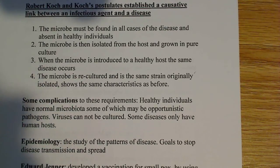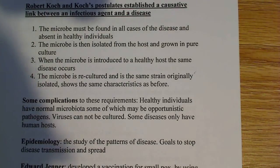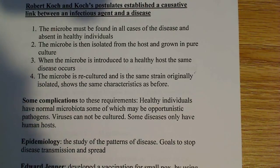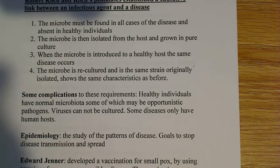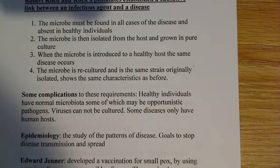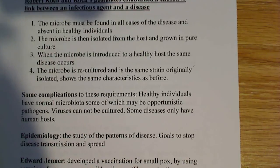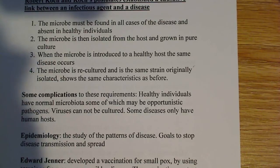Healthy individuals also may have what are called opportunistic pathogens — microbes that colonize the body but become pathogenic only if the immune system or host is compromised in some way. Also, some diseases are caused by viruses, which cannot be grown in pure culture, so they don't fit these postulates. And some diseases have only human hosts — like HIV, which can only be inoculated into a human host — so the only option is to study similar diseases in other animals.